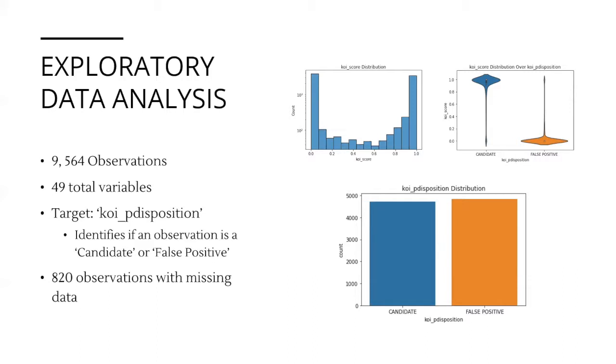We also looked at how the KOI score variable is distributed both for our target variable and for each value of the target variable. This will help us understand the relationship between KOI score and the target variable. This histogram shows the distribution for all KOI scores scaled to support a better visual understanding of the distribution.